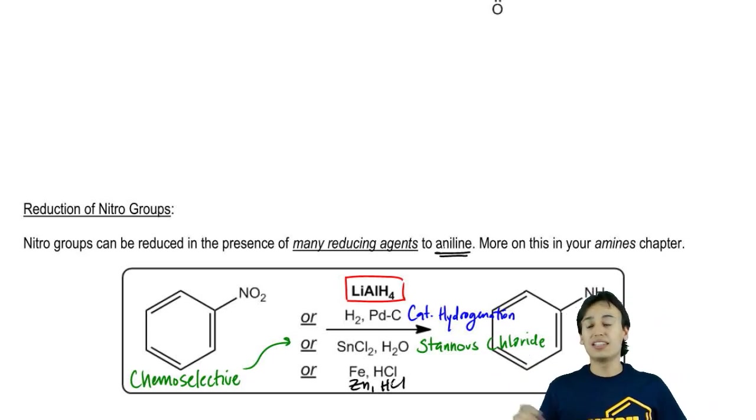The exact reducing agent you'll end up using the most is probably up to your professor more than anything else. But keep in mind that all these reagents could be used in some way or another to reduce a nitro group to an aniline.